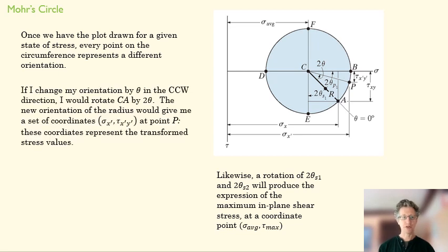Once we have the plot drawn, every point on the circumference of the circle represents a description of this state of stress using a different coordinate system. If I rotate my orientation by theta, I'm going to take CA here and rotate it to theta. Say I changed my orientation by 5 degrees, I would rotate CA here by 10 degrees and find point P.